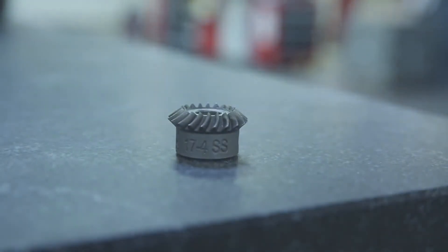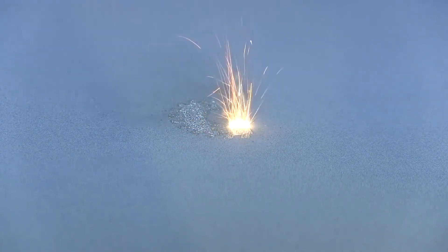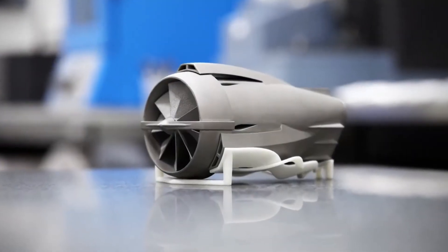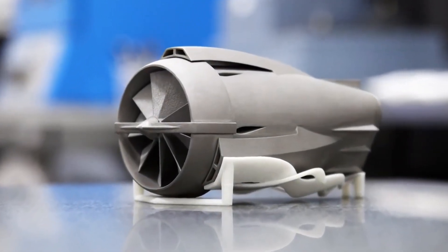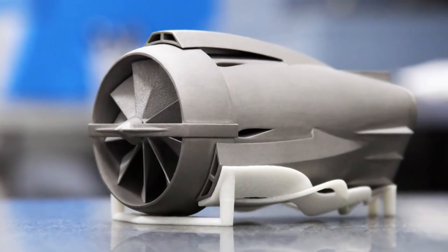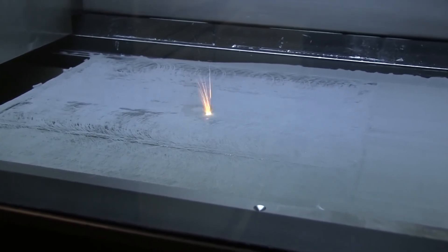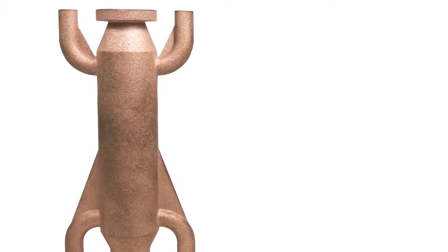Direct metal laser sintering, also known as DMLS, is an additive manufacturing technology that creates metal parts directly from 3D CAD data without the need for tooling. DMLS utilizes a variety of metal and alloy materials such as stainless steel, cobalt chrome and Inconel to create strong, durable parts and prototypes. DMLS is an excellent choice for functional metal prototypes, high temperature applications and end use parts.